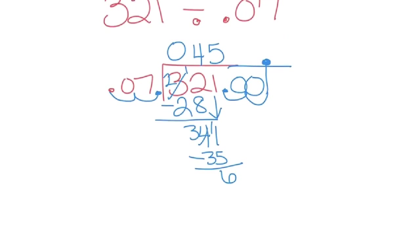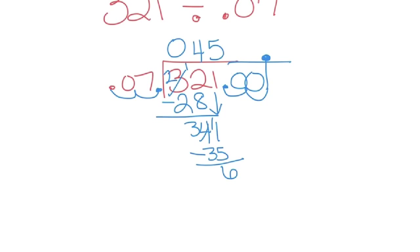Let me squish this up just a little bit so we've got more room. And we will bring down our 0. Divide again. 7 goes into 60, 8 times. 8 times 7 is 56. Subtract.